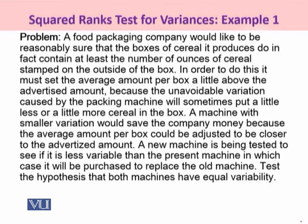In order to do this, it must set the average amount per box a little above the advertised amount, because the unavoidable variation caused by the packing machine will sometimes put a little less or a little more cereal in the box. A machine with smaller variation would save the company money because the average amount per box could be adjusted to be closer to the advertised amount.